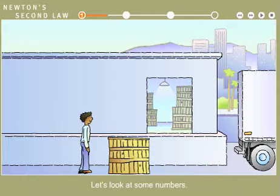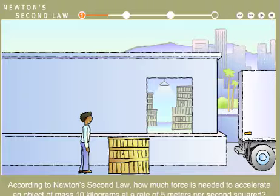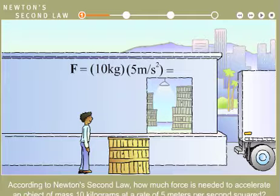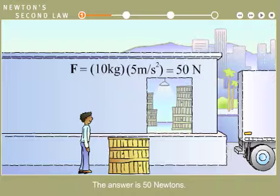Let's look at some numbers. According to Newton's second law, how much force is needed to accelerate an object of mass 10 kilograms at a rate of five meters per second squared? The answer is 50 Newtons.